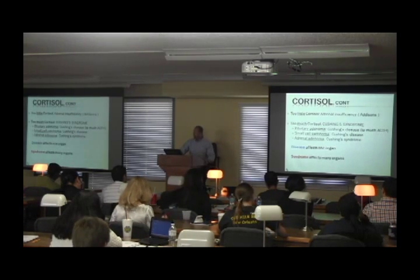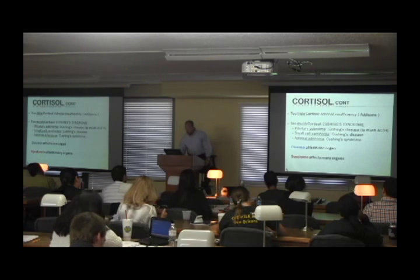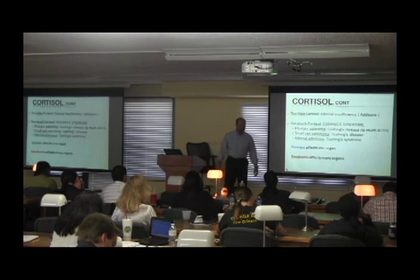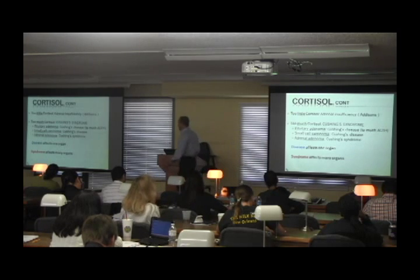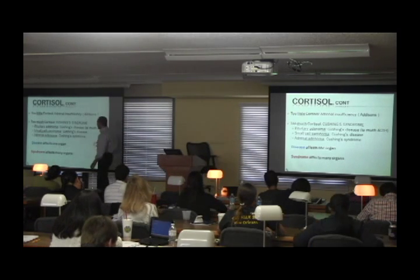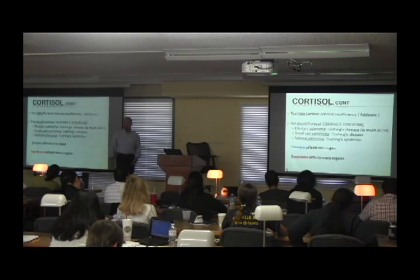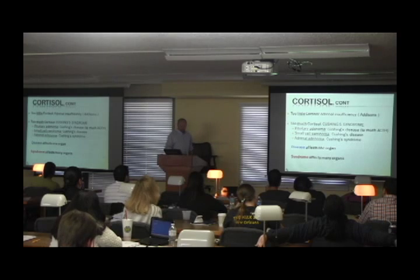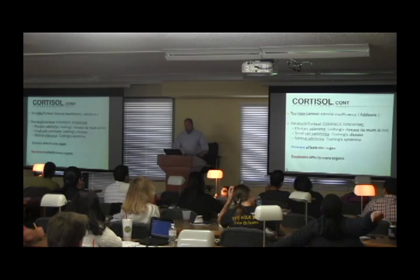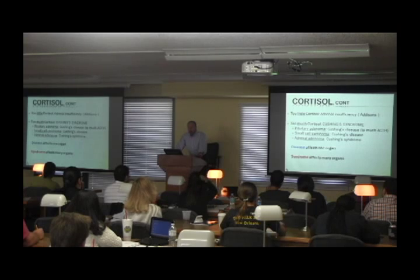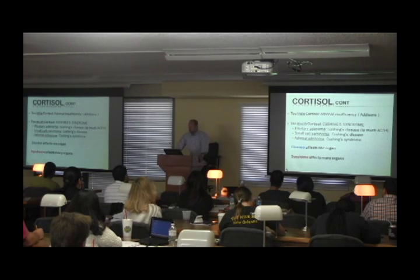There are three major types. Obviously, pituitary, could be the lungs, or the adrenals — that's all it is. There's three areas. Now, when I use the word disease, I affect one organ. Syndrome affects many organs. As I go forward and talk about all of the Cushing's, all of them as a group are called Cushing's Syndrome.